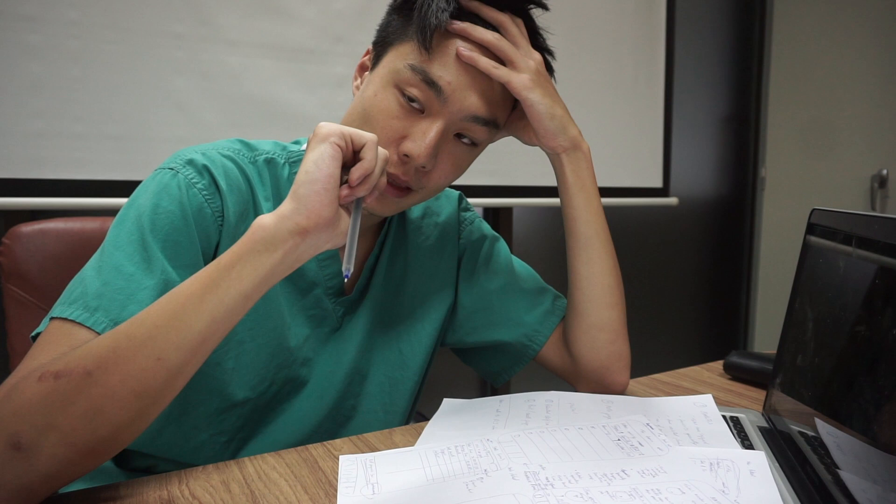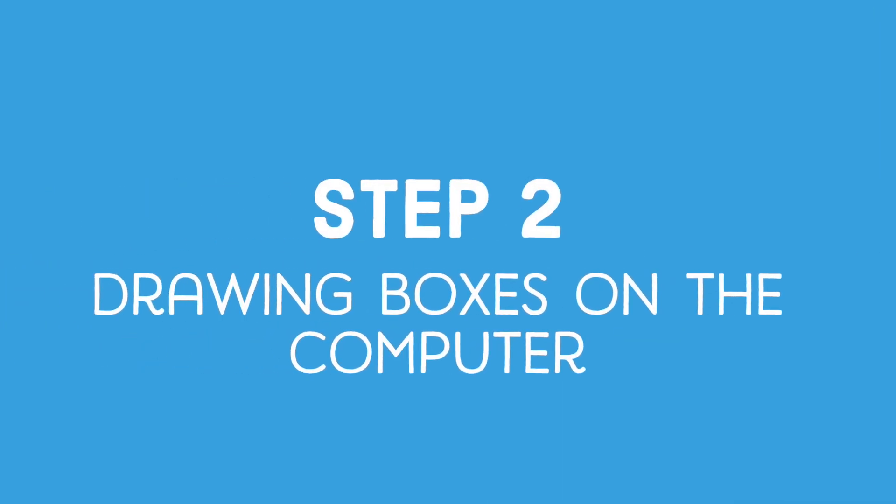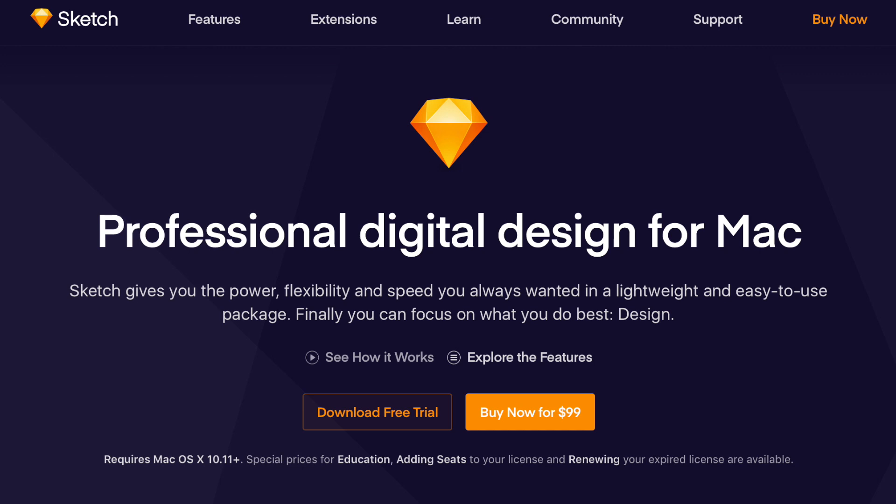After Ben spent a few hours with pen and paper drawing these boxes, we had a session where we discussed the ideas and suggested improvements. Once we had the sketches, the next step was to convert them into a computerized design. The app I personally like using is called Sketch — it's Mac-only and costs about £40 for a student license. If you don't want to pay, you can use Figma, which is free and web-based, or even PowerPoint and Word, since they let you draw boxes on a page too.